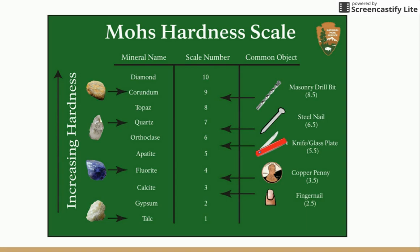Common objects equivalent to certain hardness levels are listed on the scale. For example, talc is not as hard as a fingernail, but fluorite is a little bit harder than a fingernail. So a fingernail would scratch talc, but talc would not scratch a fingernail. Conversely, fluorite could scratch a fingernail, but a fingernail cannot scratch fluorite. That's how we read this scale.